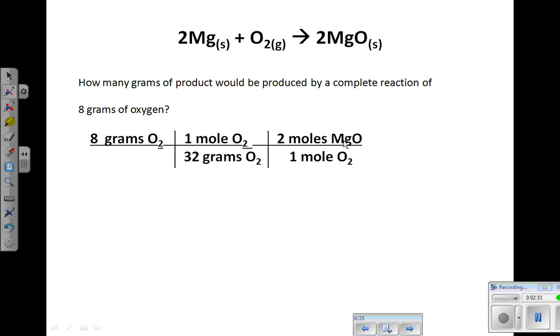Now we're at moles of magnesium oxide. We need to get to grams of product. So we need to convert moles of this compound to grams of that compound. We cannot find the molar mass of a compound on the periodic table, but we can find it of the individual elements that are in that compound. So we're going to do a little problem down here on the bottom, and figure out the molar mass of our product.